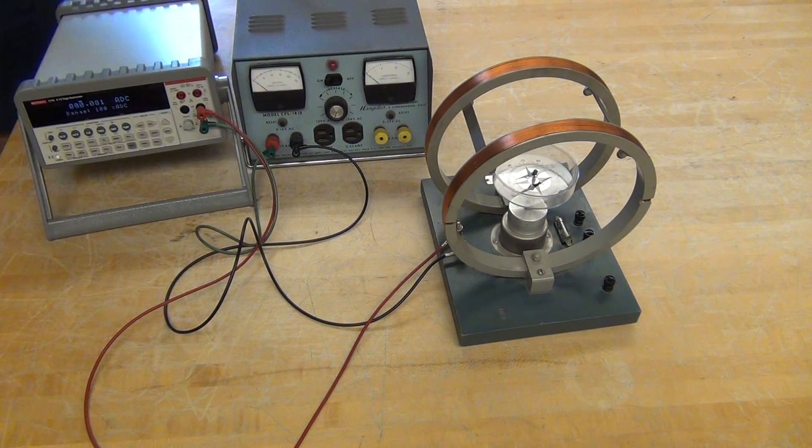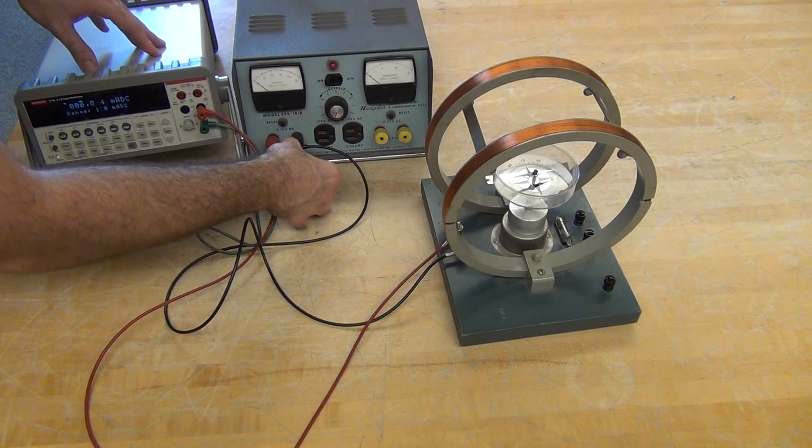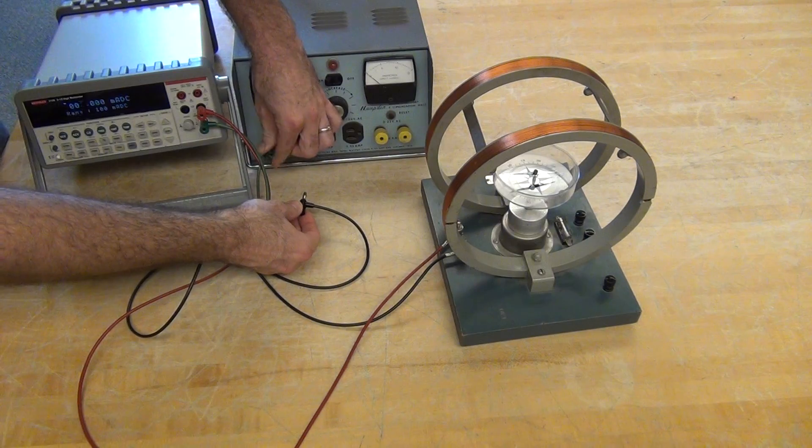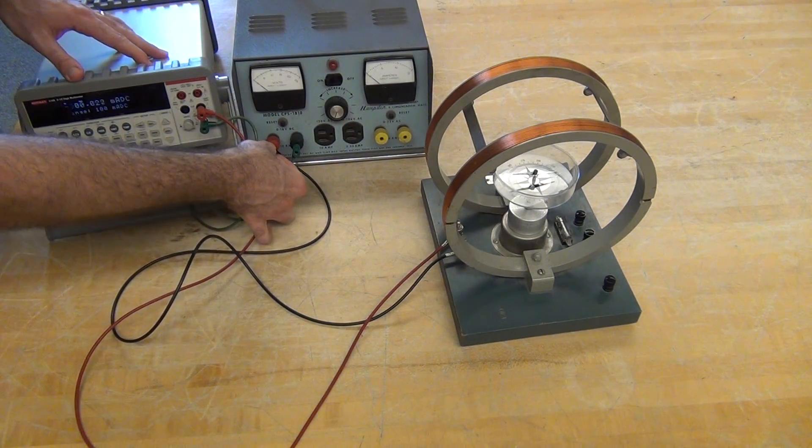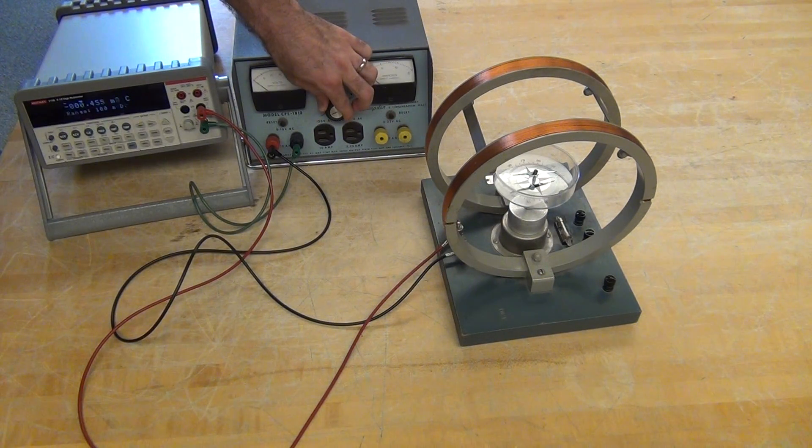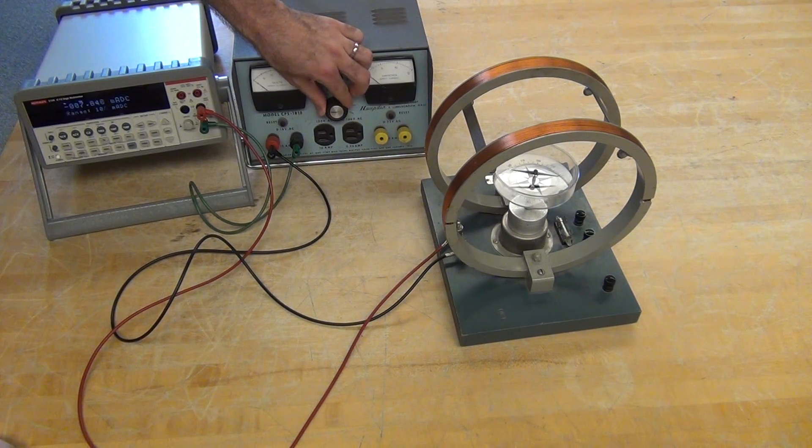Then I want to check the other side. Without changing any of my orientation, I'm going to take these out and switch them so that the current is now going in the other direction. We should see the compass needle deflect in the other direction, and now we measure a negative current, which is just fine.